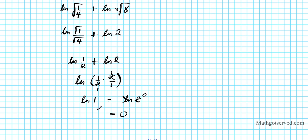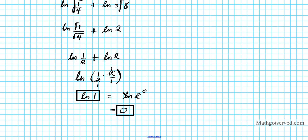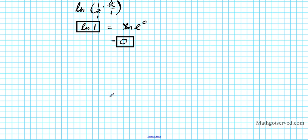So if you had stopped at the natural logarithm of 1 or went all the way to zero, both answers are correct — ln(1) and zero are the same thing. That's your answer for question two.